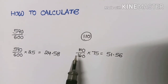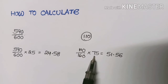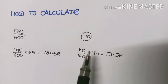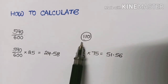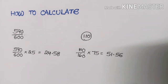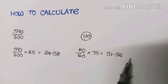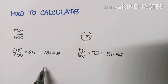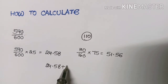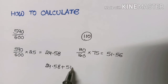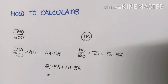Suppose the student secured 110 marks in the MSET examination. We take 110 divided by 160, multiplied by 75, since 75% weight is given to the MSET marks. That gives us 51.56.